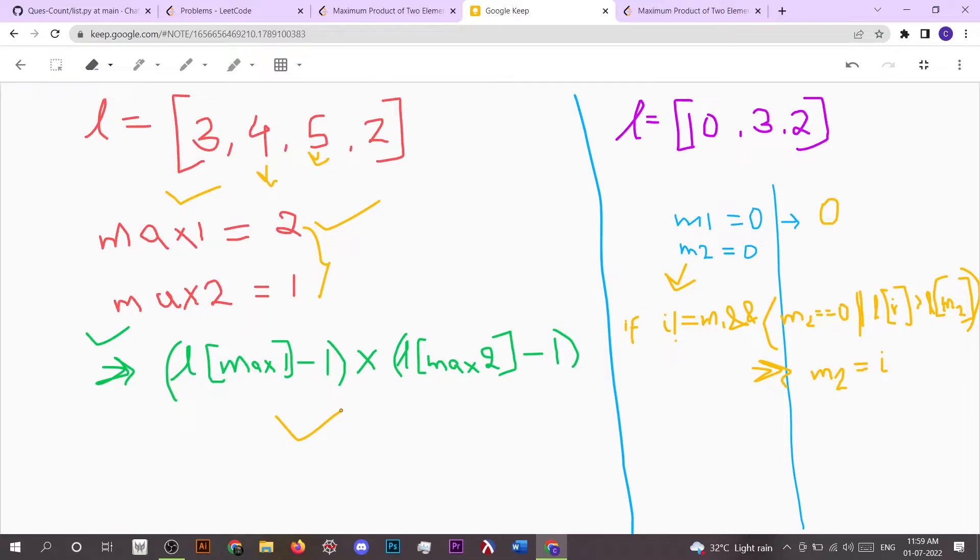To solve this problem, for finding the max value we can simply run a for loop and get the maximum index max1. For getting max2, while running the loop, if our i value is not equal to m1, we don't want to repeat the indices of max1 and max2. That's why we're checking if our i value is not equal to m1, then we can replace it.